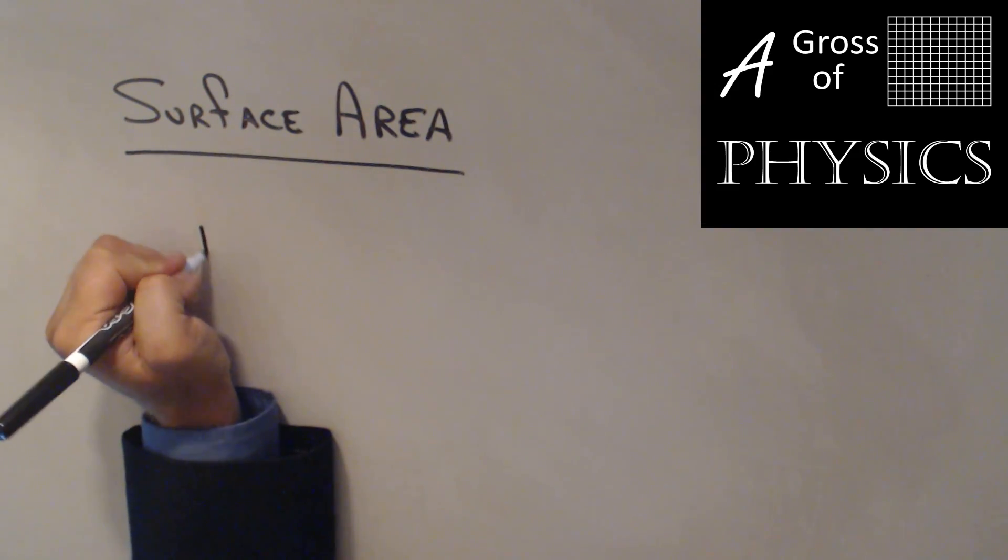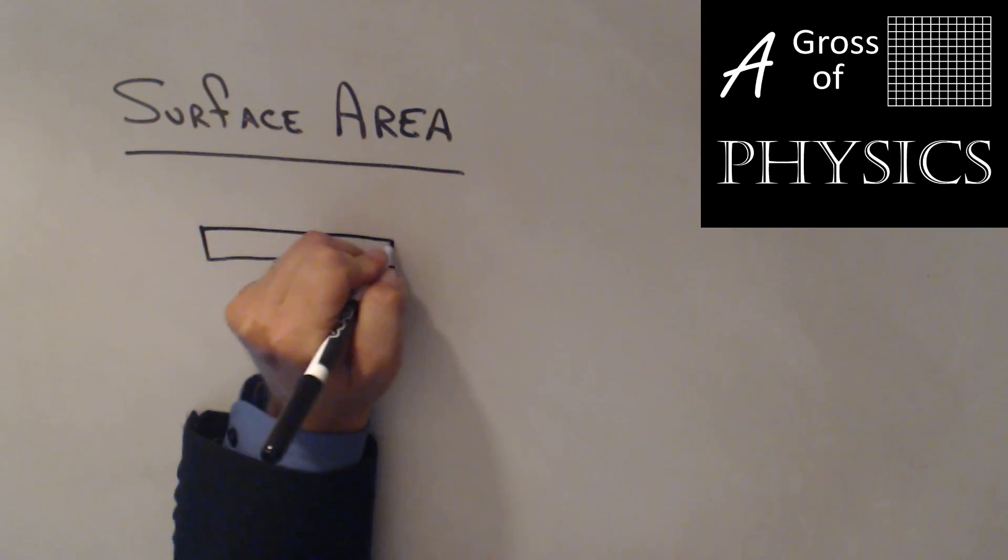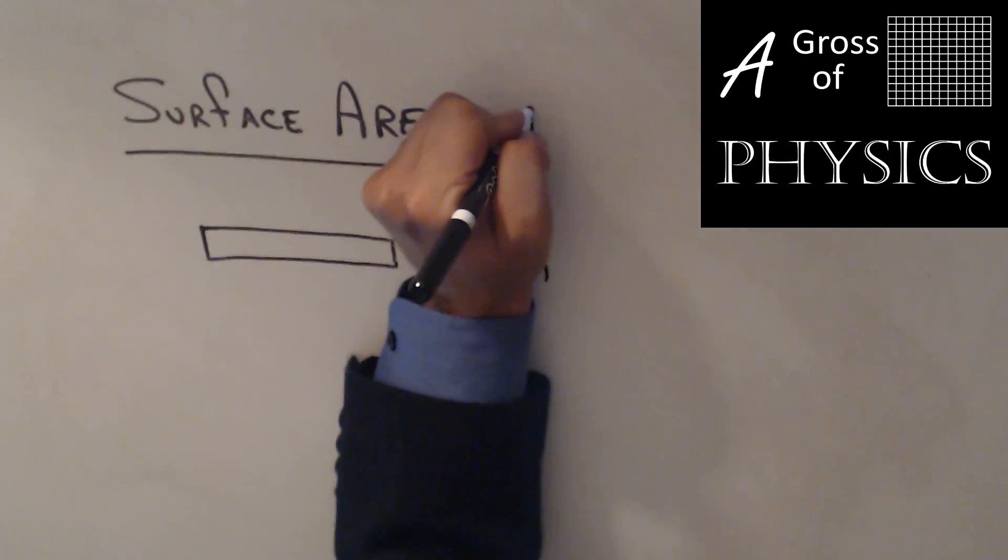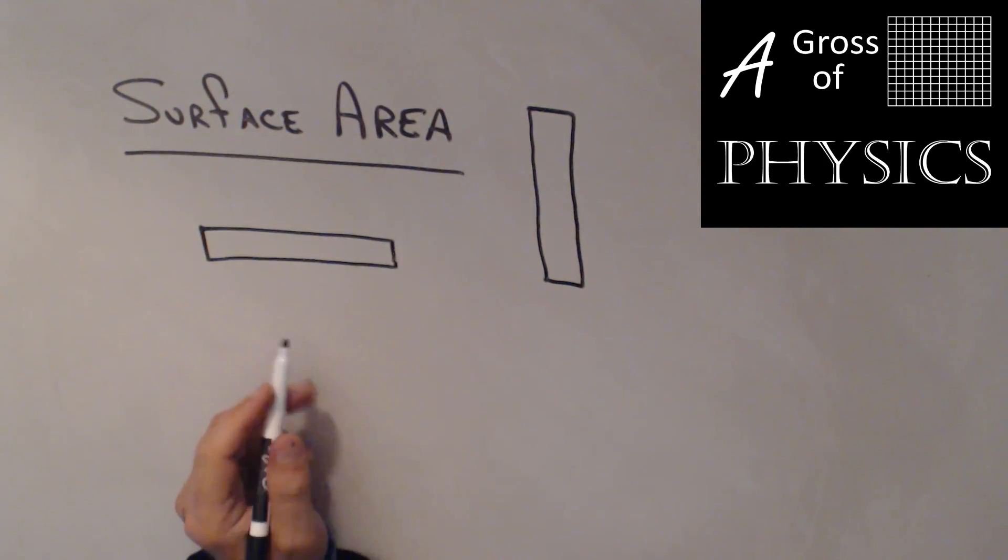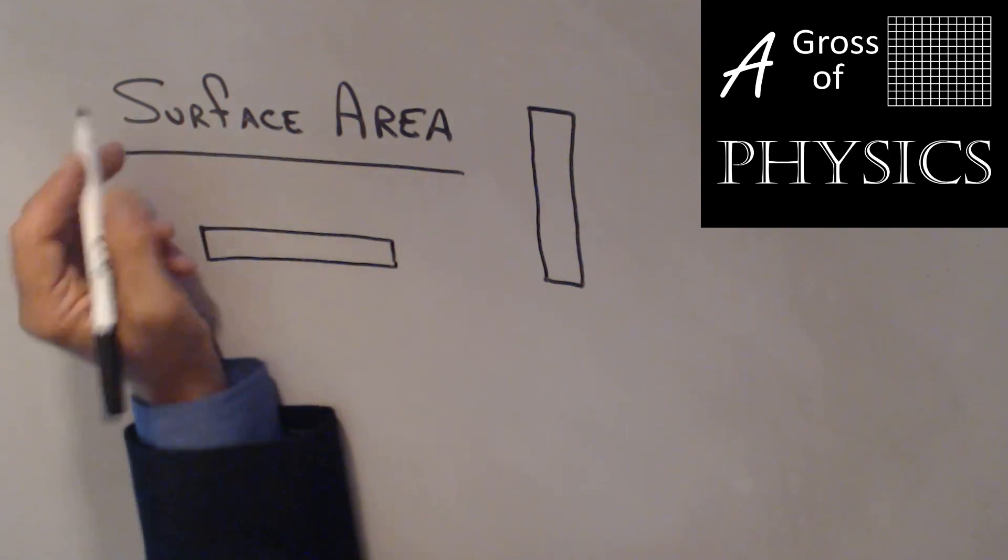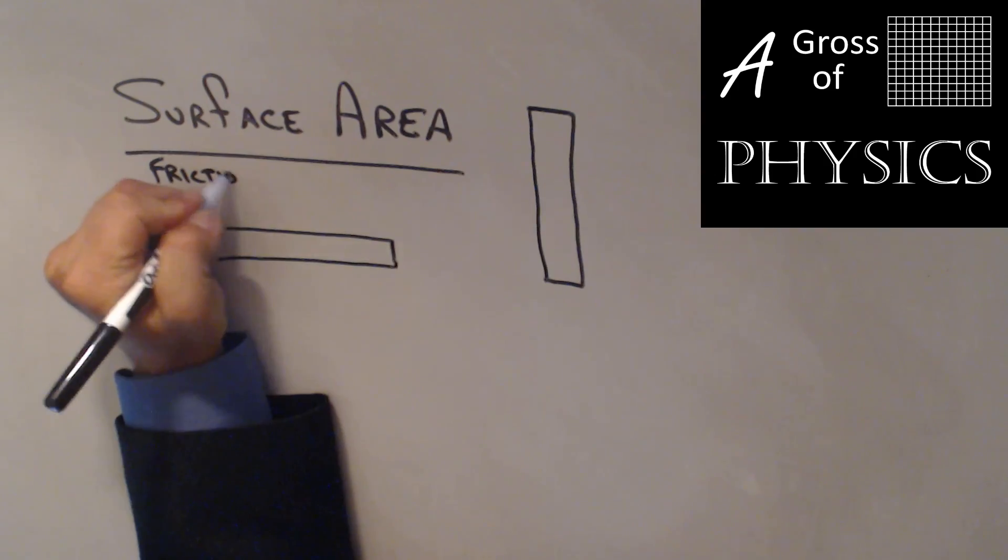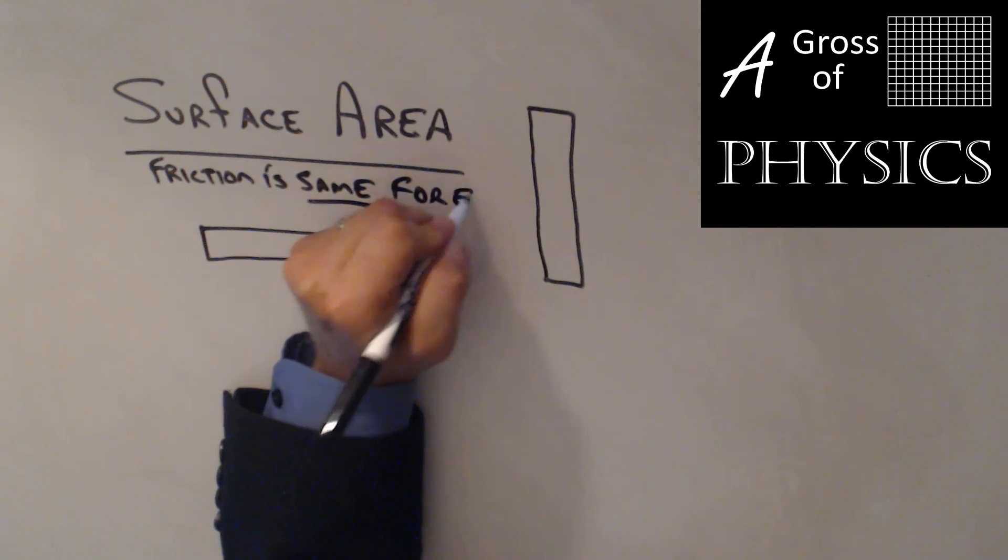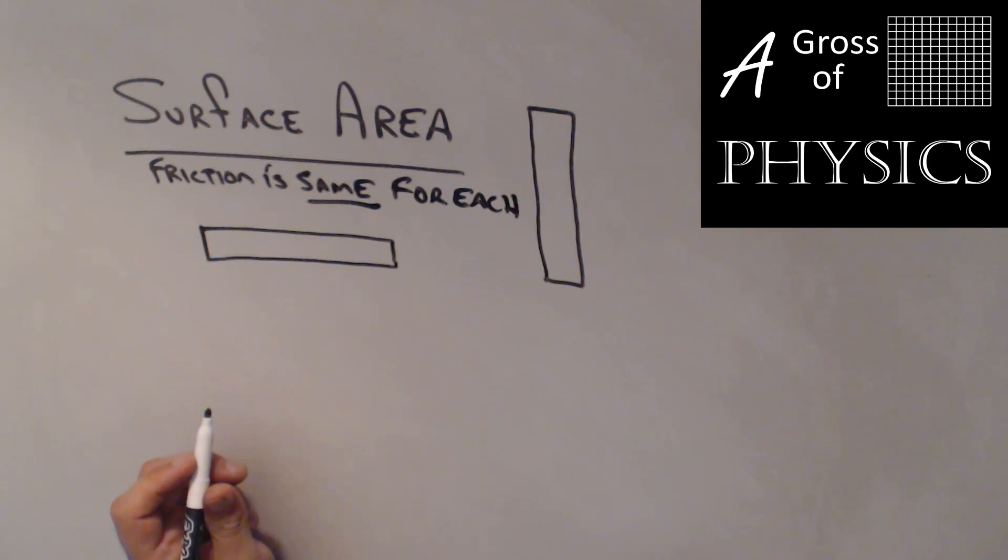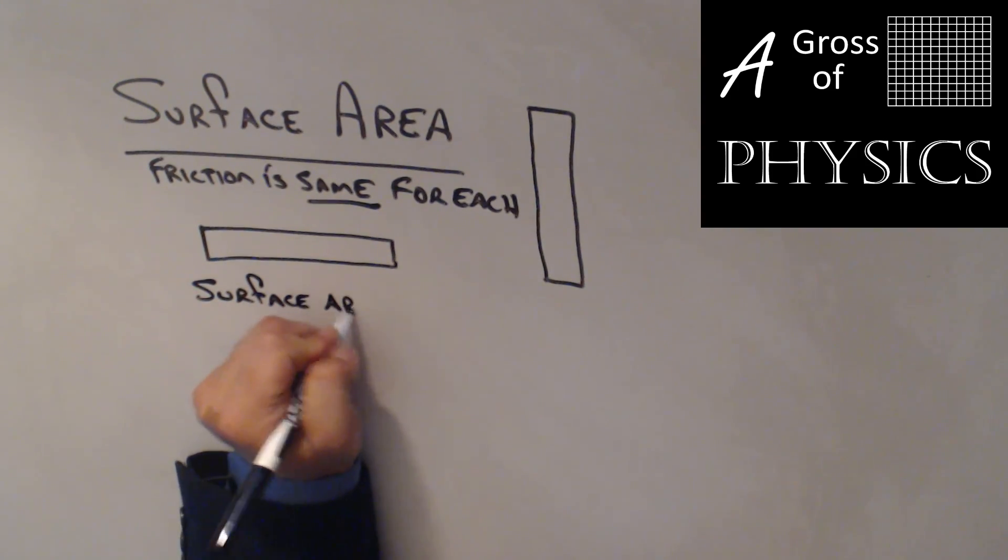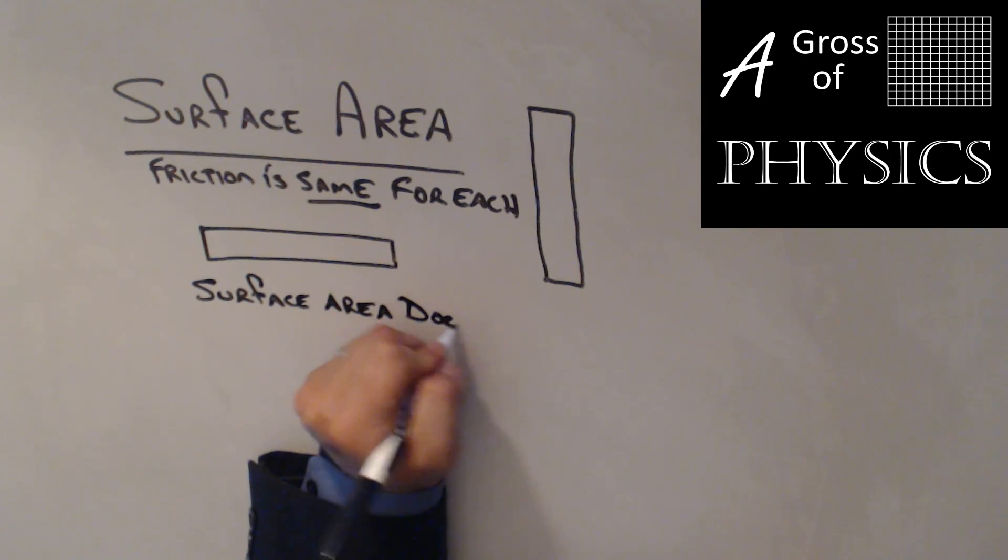Now one would think if I have an object like this, let's say like a book, and I place it on its cover versus placing it on its spine, we would have more friction when it's laying flat and less friction when it's vertical like this. That's not true. The reality is friction is the same for each. So what does that tell me about surface area? Surface area does not matter. Now here's why.